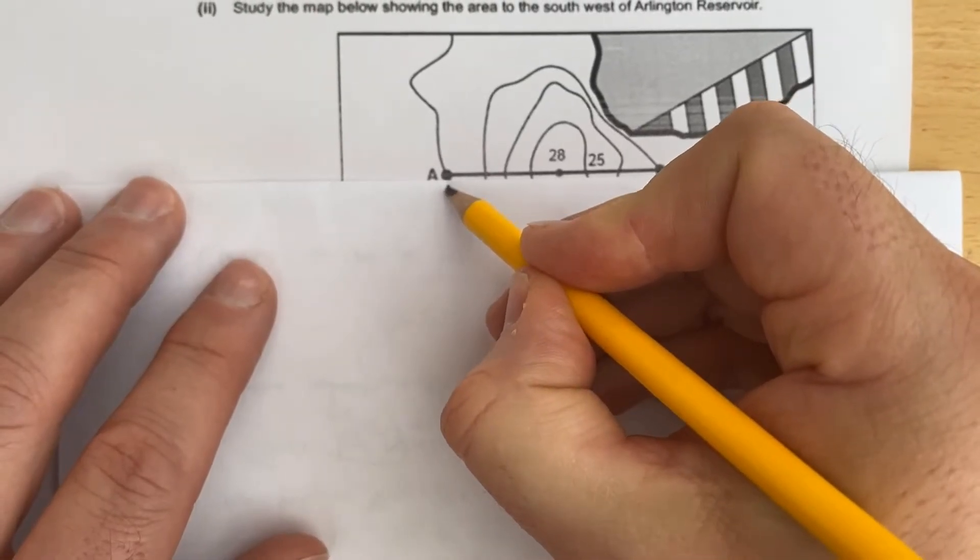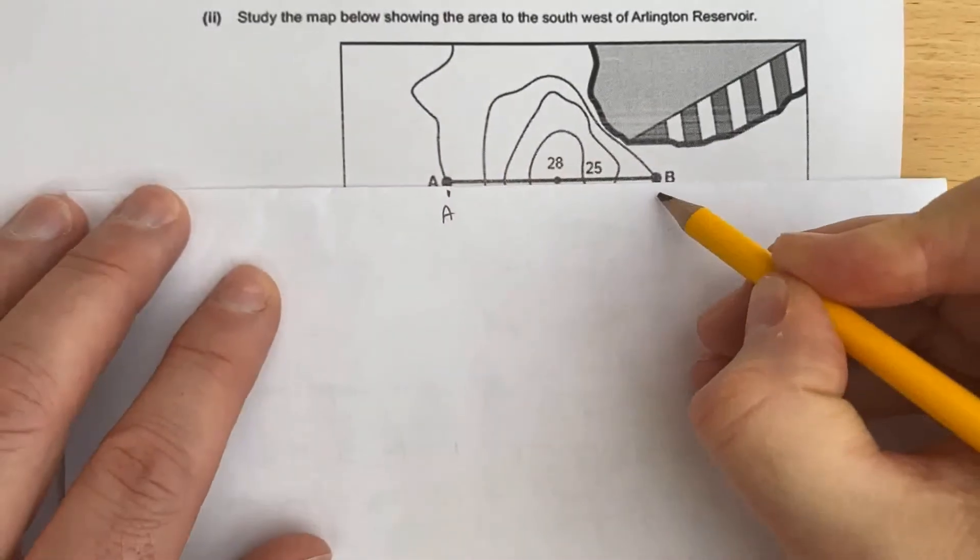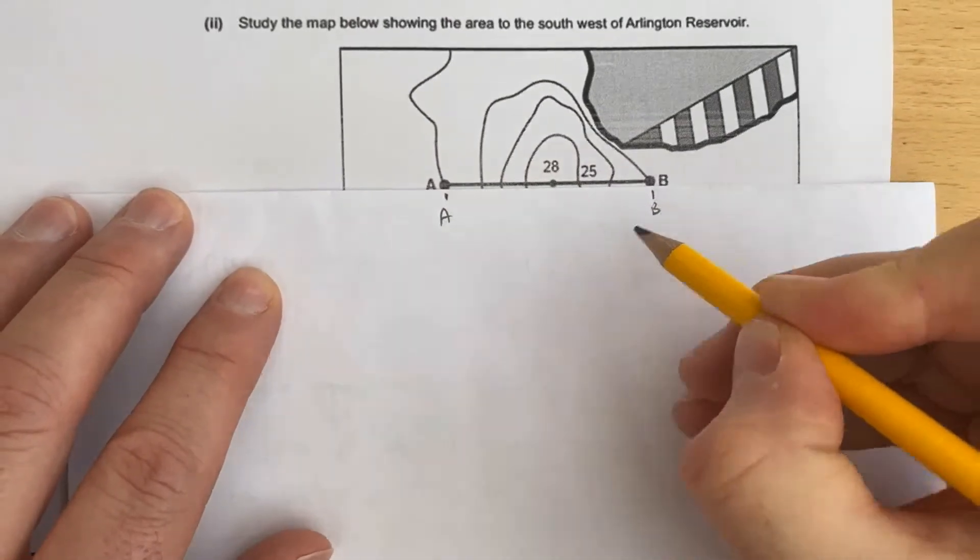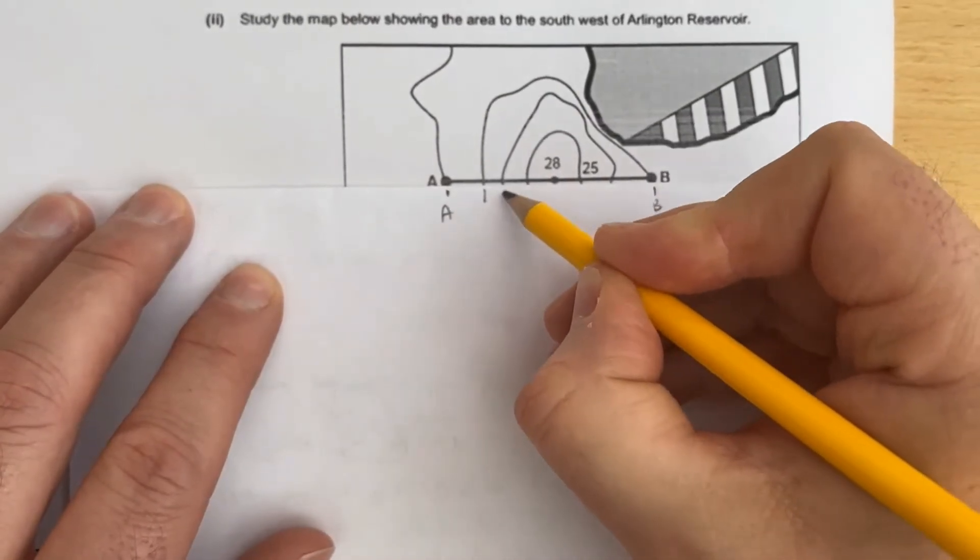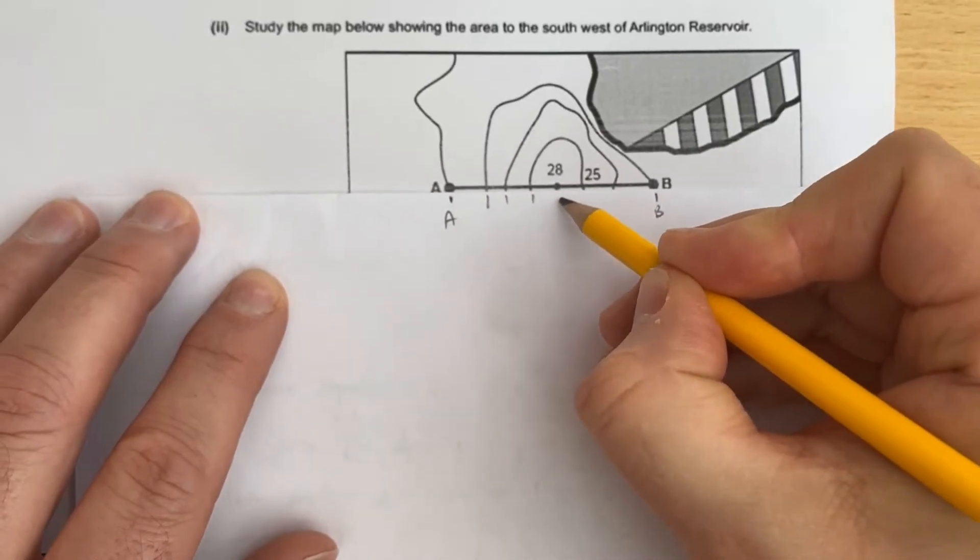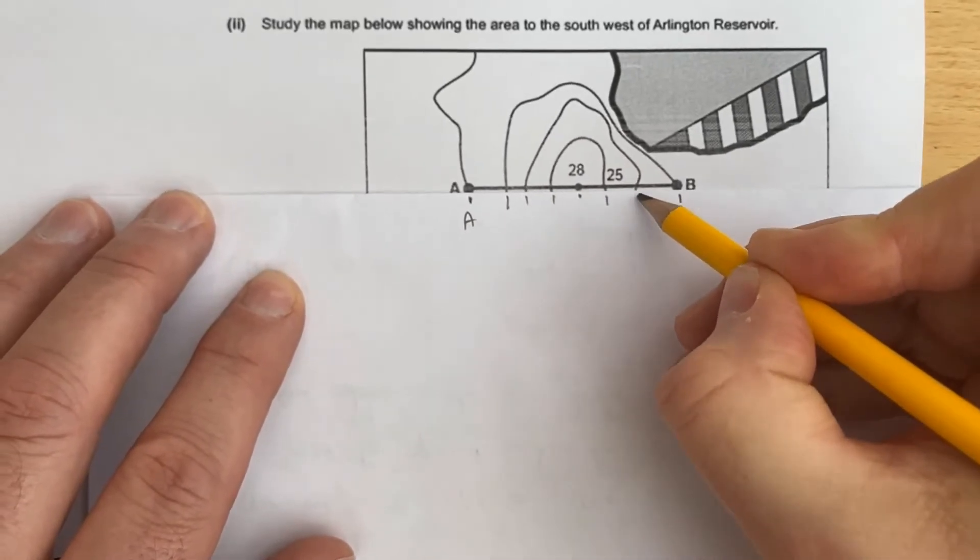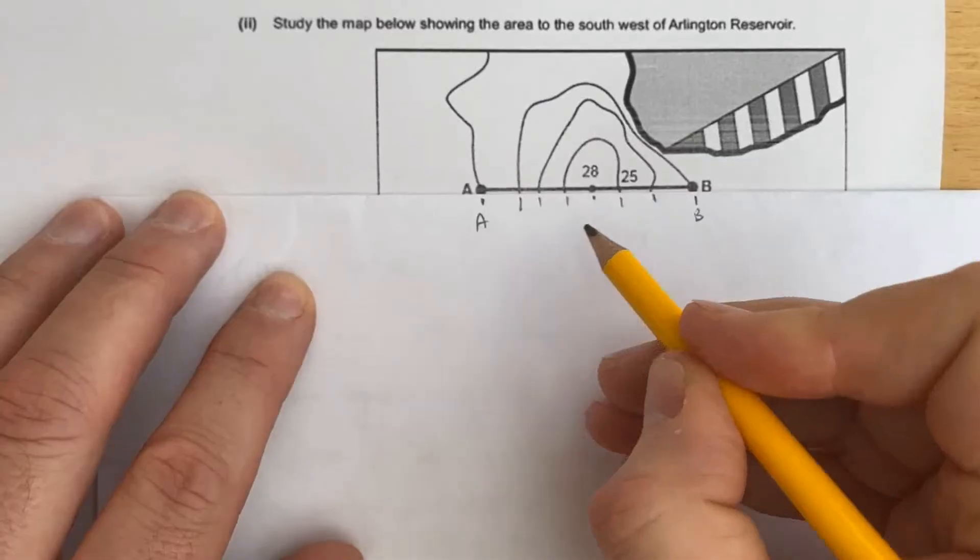To do the line, we mark on A and B. Be very careful not to move the paper, and then wherever the line crosses over the contours, you write them down.